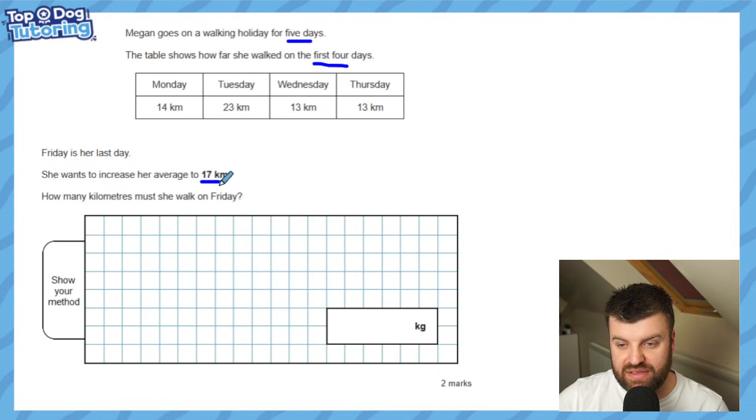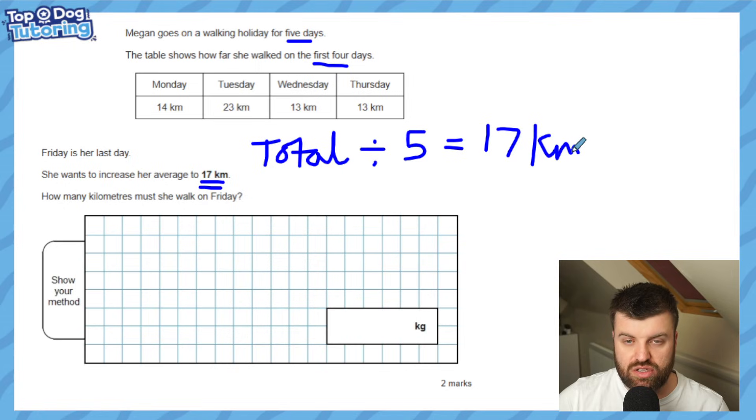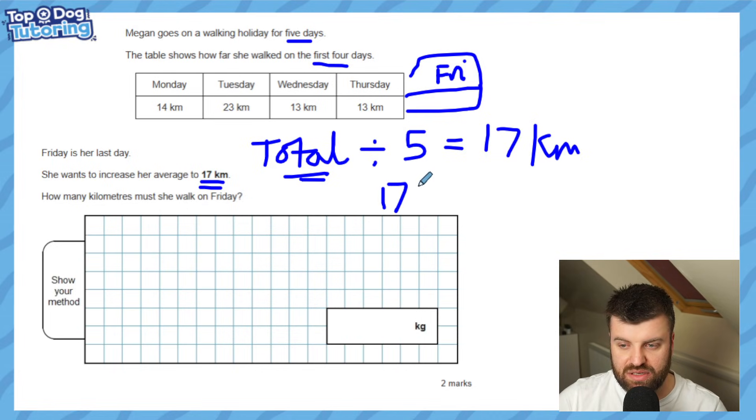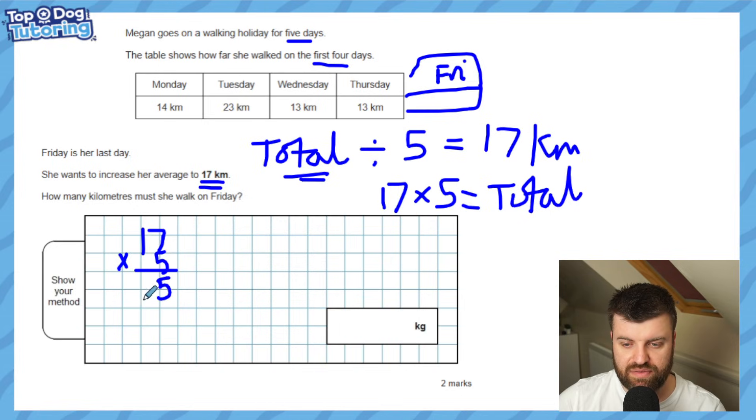She wants her average to be 17 kilometers when she's walked on the fifth day. Let's look at the formula: total divided by 5 equals 17 kilometers. To work backwards and figure out what Friday must be, we need to know what her total has to be, and we'll get there using the inverse. The total divided by 5 is 17, so if I use the inverse, I can take my 17 kilometers, times it by 5, and that gives me the total. I'm working backwards - this is basically algebra as well. 17 multiplied by 5 - let's use short division. 7 times 5 is 35, 5 times 1 is 5 plus 3 is 8, so that's 85. I want the total kilometers walked to be 85 kilometers.